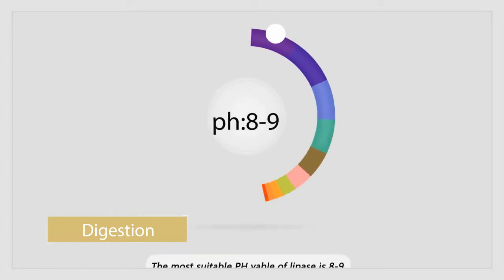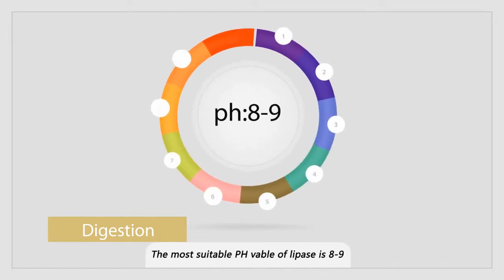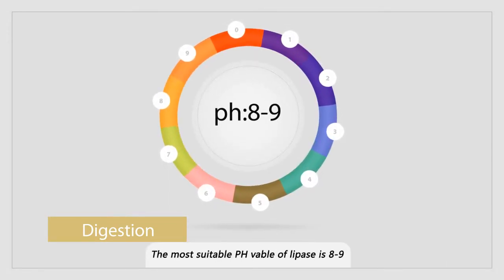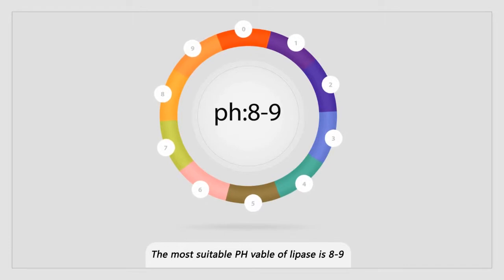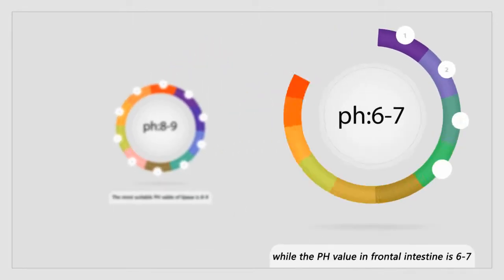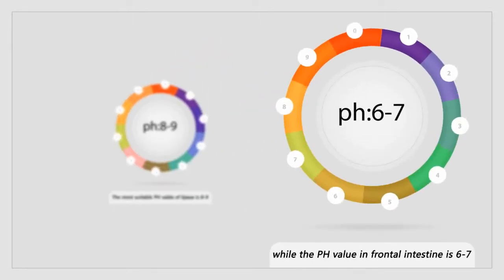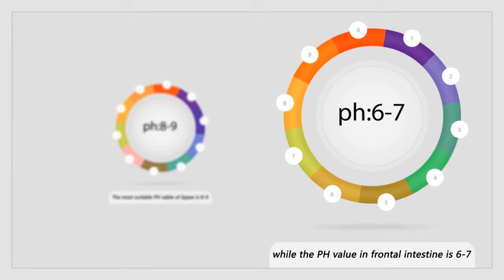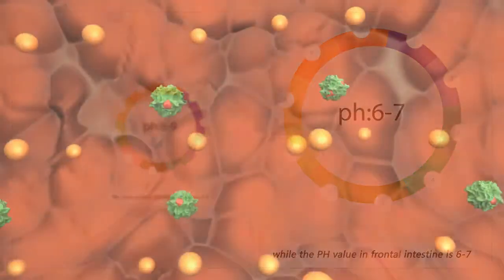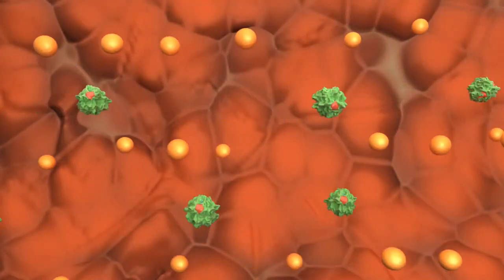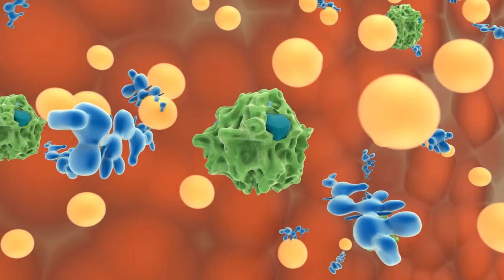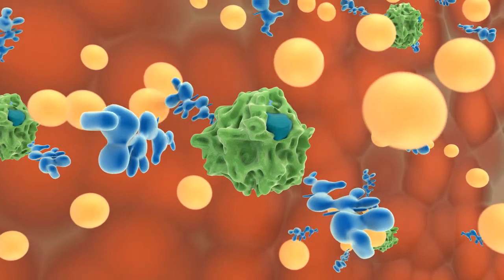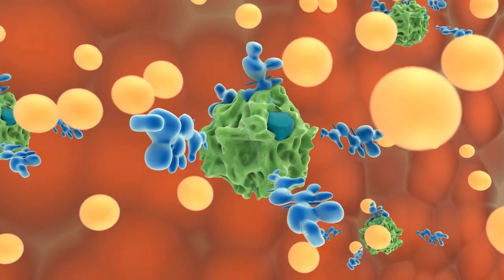For digestion, the suitable pH value for lipase is 8 to 9, but the pH value in the intestine is only 6 to 7. Lipase cannot work effectively under this condition, but it can be activated by bile acids.